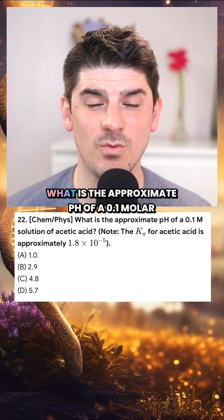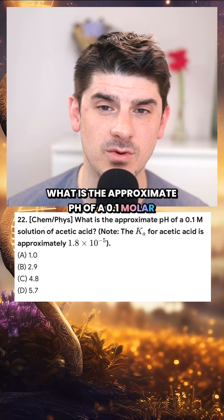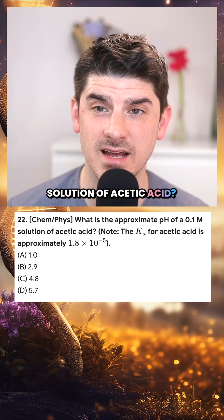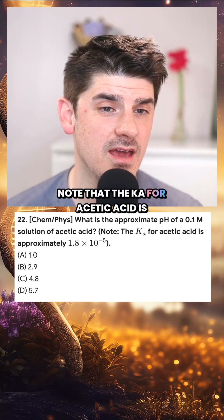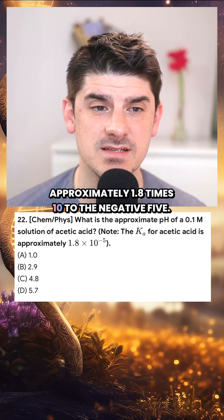Let's do an MCAT problem. What is the approximate pH of a 0.1 molar solution of acetic acid? Note that the Ka for acetic acid is approximately 1.8 times 10 to the negative 5.